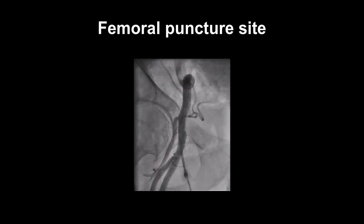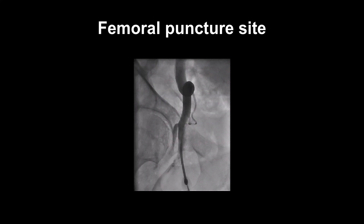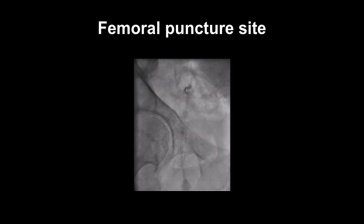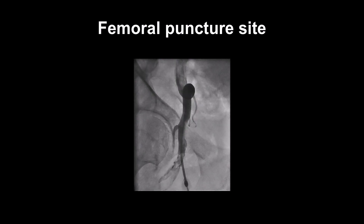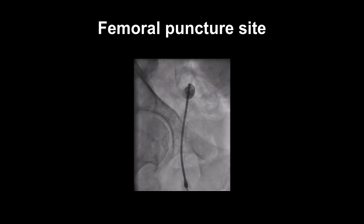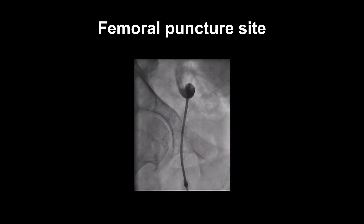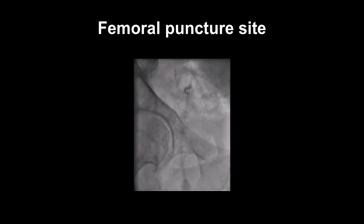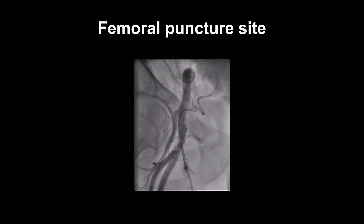This is a femoral angiogram via a sheath to show the puncture site above the bifurcation. Note that the entry point of the artery is where the sheath seems to bend slightly and is opposite the femoral head. Sometimes waggling the sheath a little during fluoroscopy helps identify the puncture site better — just remember not to get your fingers in the x-ray beam and not to pull the sheath out by over-vigorous waggling.